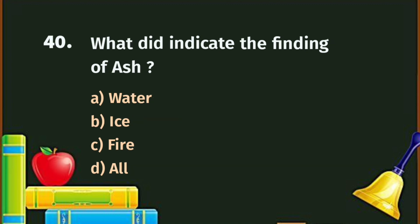Question number 40. What did the finding of ash indicate? A. Water, B. Ice, C. Fire, D. All. The correct answer is C - Fire. The finding of ash indicates that early humans used fire.